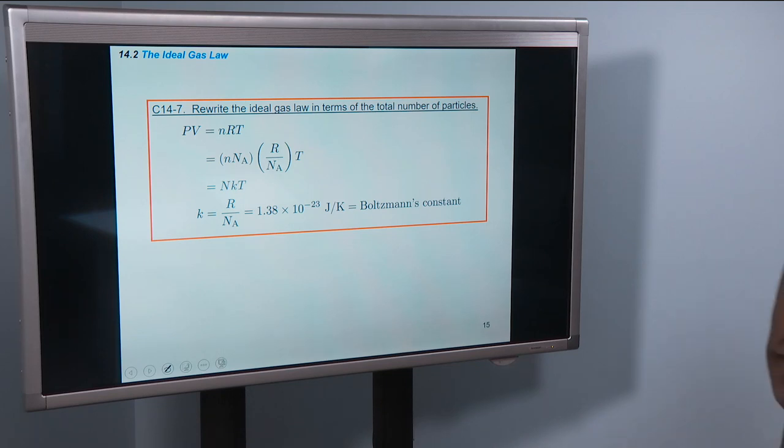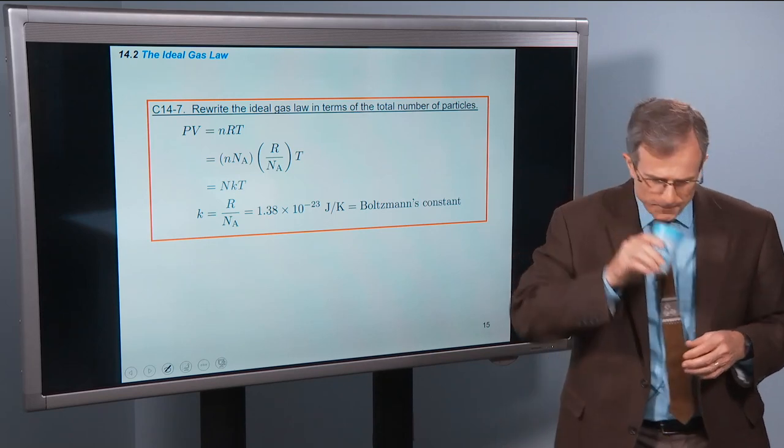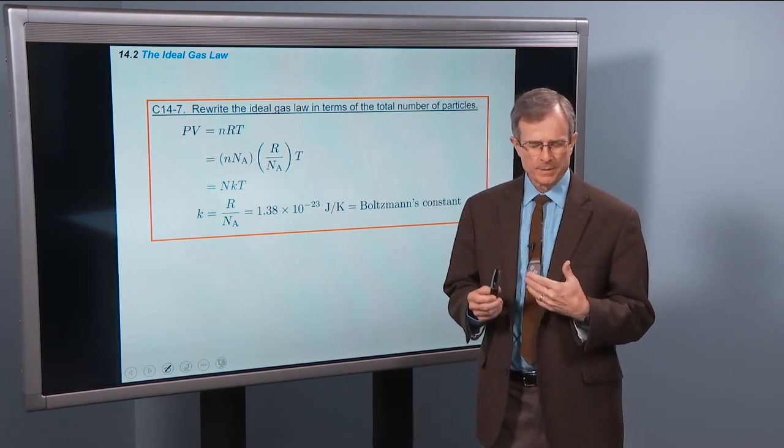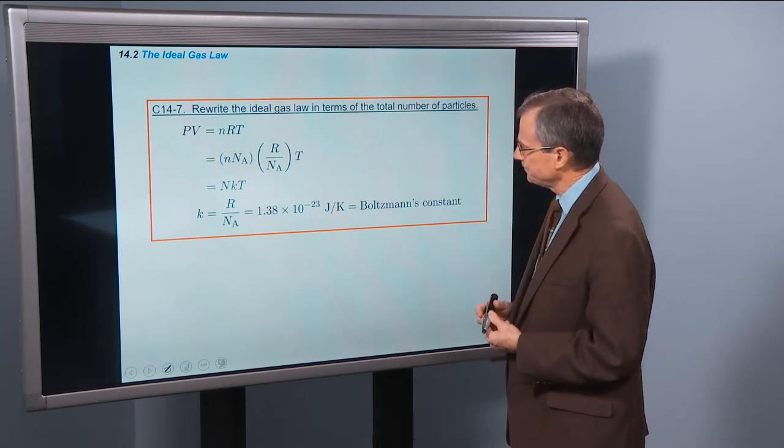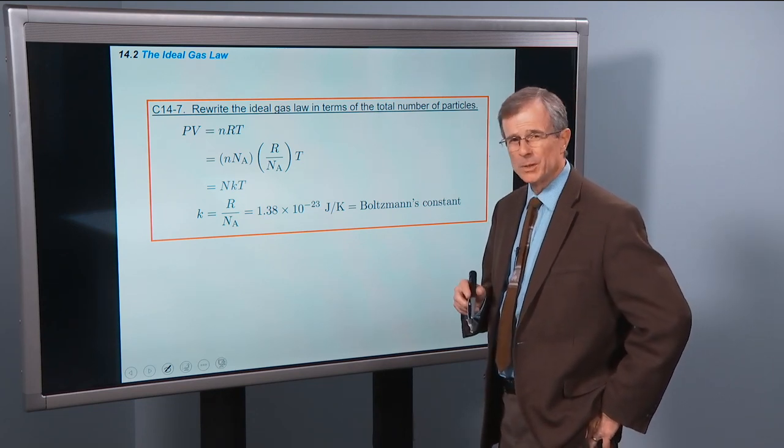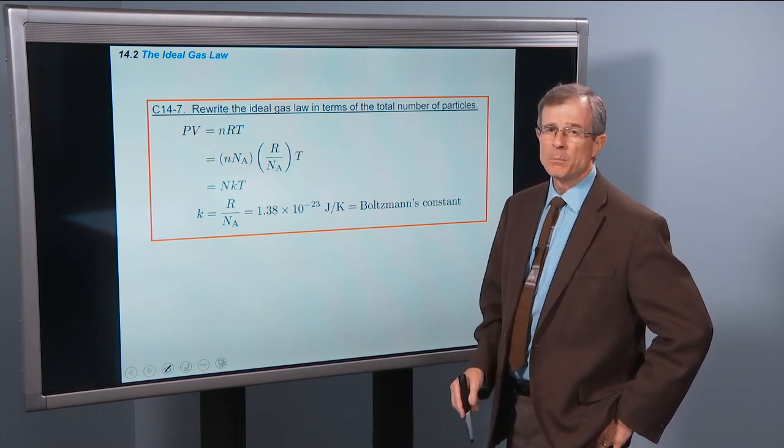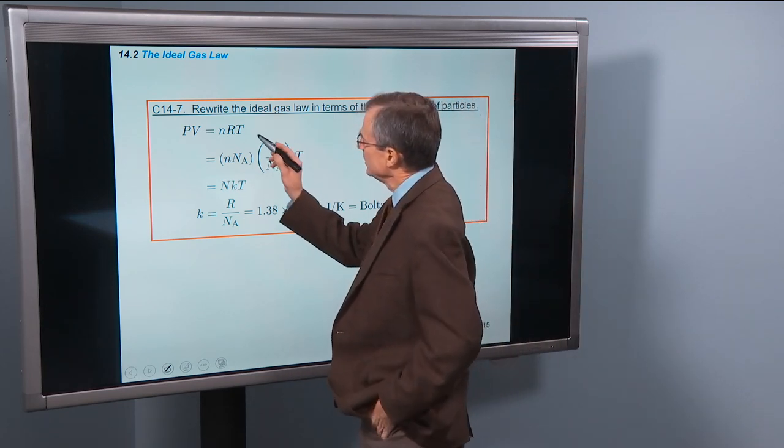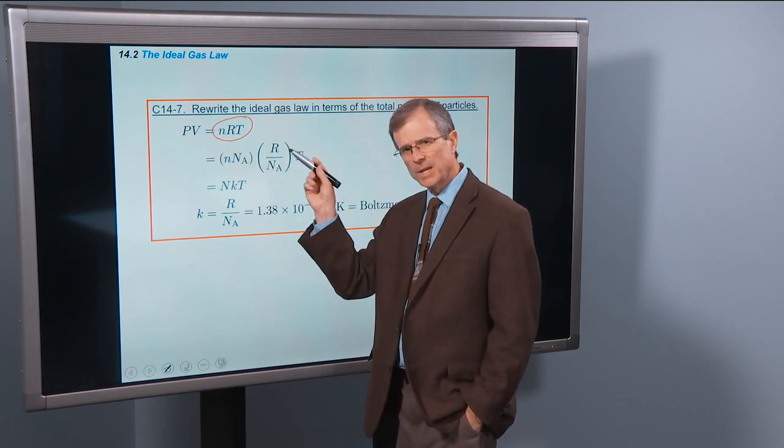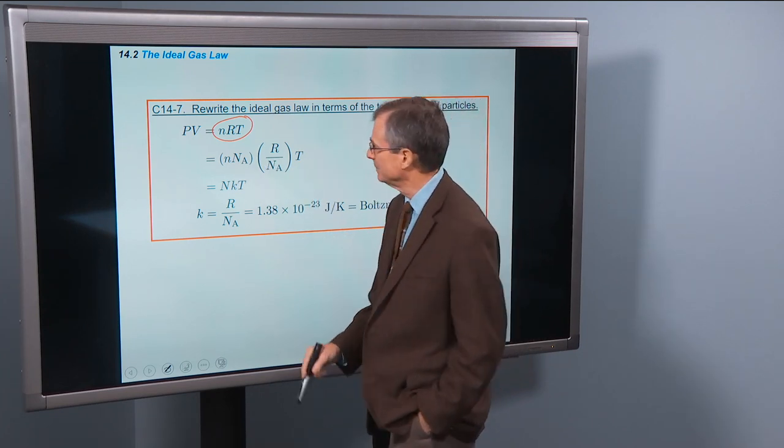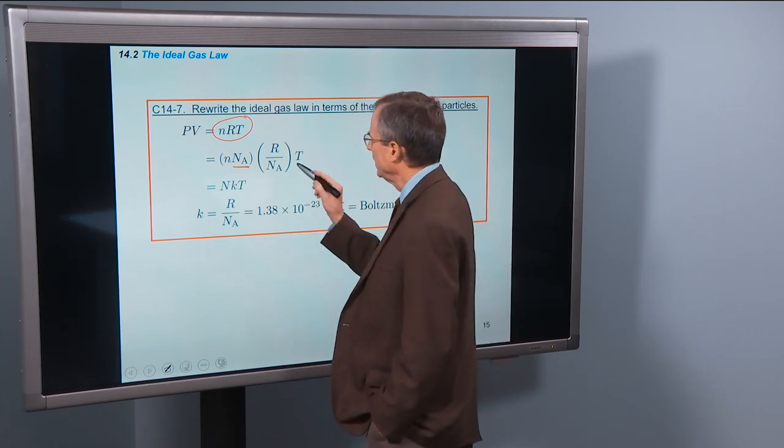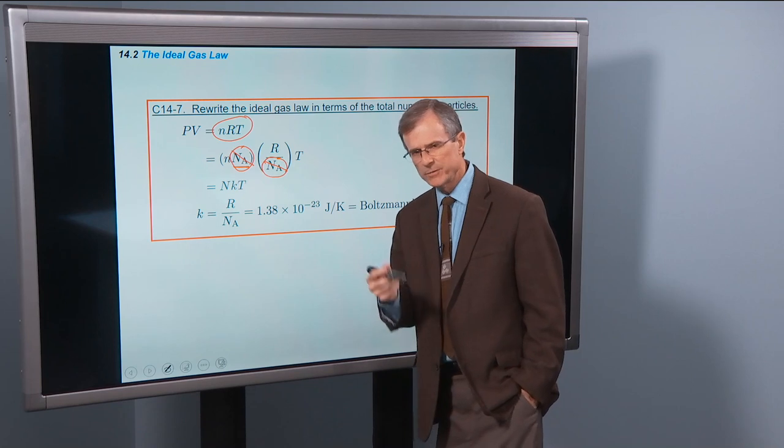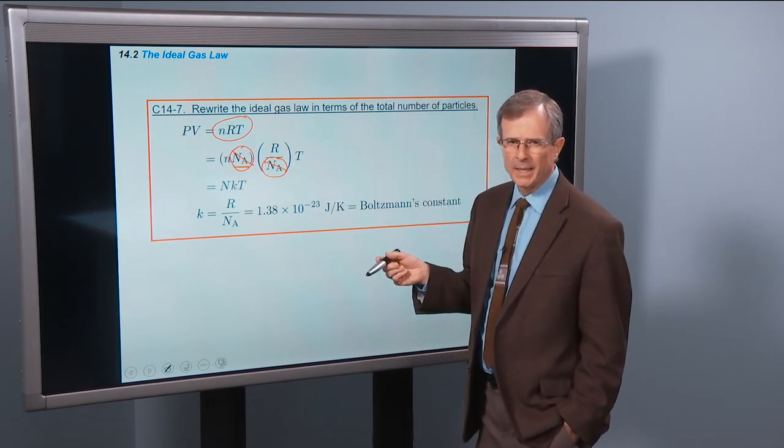So we're now going to rewrite the ideal gas law in terms of the total number of particles. This is more the physicist's way of writing the ideal gas law. The way that we wrote it down, PV equals NRT, is the way that normally chemists will use. So the trick here is that we want to rewrite it in terms of the total number of particles instead of the number of moles. That's the only difference. And to do that, the trick is to multiply and divide the right side of this equation by Na, by the Avogadro's number. Here's where I multiplied the right side by Na, and here's where I divided the right side by Na. Now clearly, I can just cancel these back out again and we get NRT on the right side. So I haven't changed the right side.